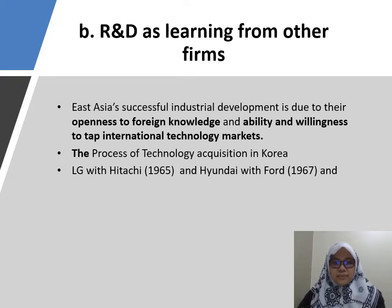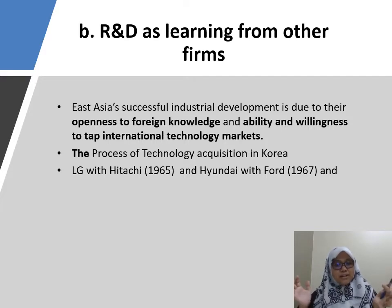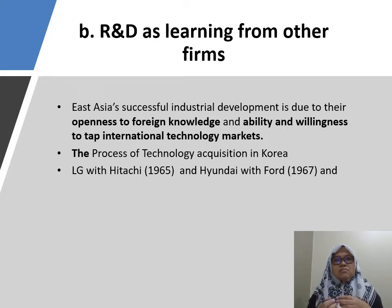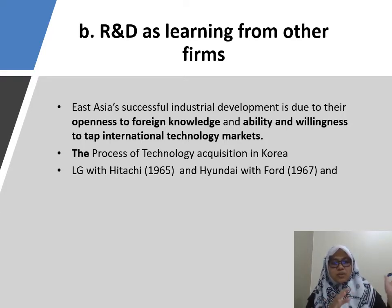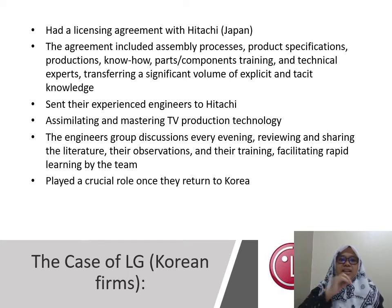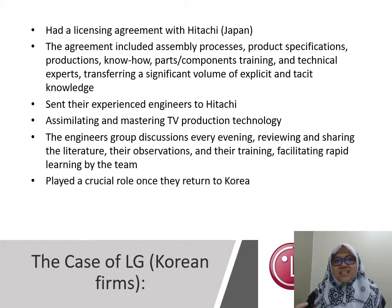The second role is R&D as learning from other firms. East Asia's successful industrial development is due to their openness to foreign knowledge and willingness to tap international technology markets. An example is the process of technology acquisition in Korea — LG with Hitachi for televisions, and Hyundai with Ford for cars. Japan started R&D much earlier than Korea, making them more advanced.